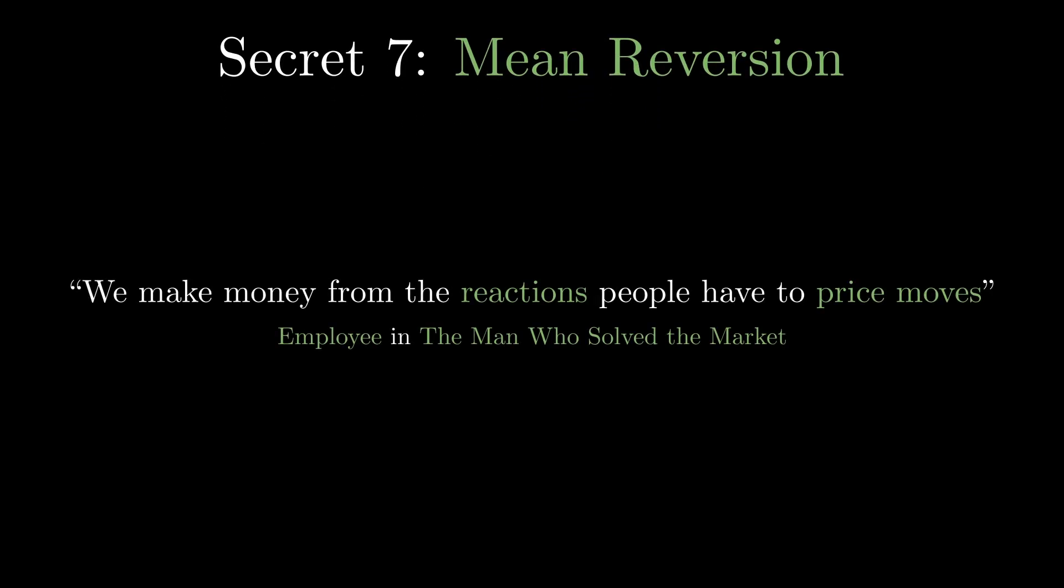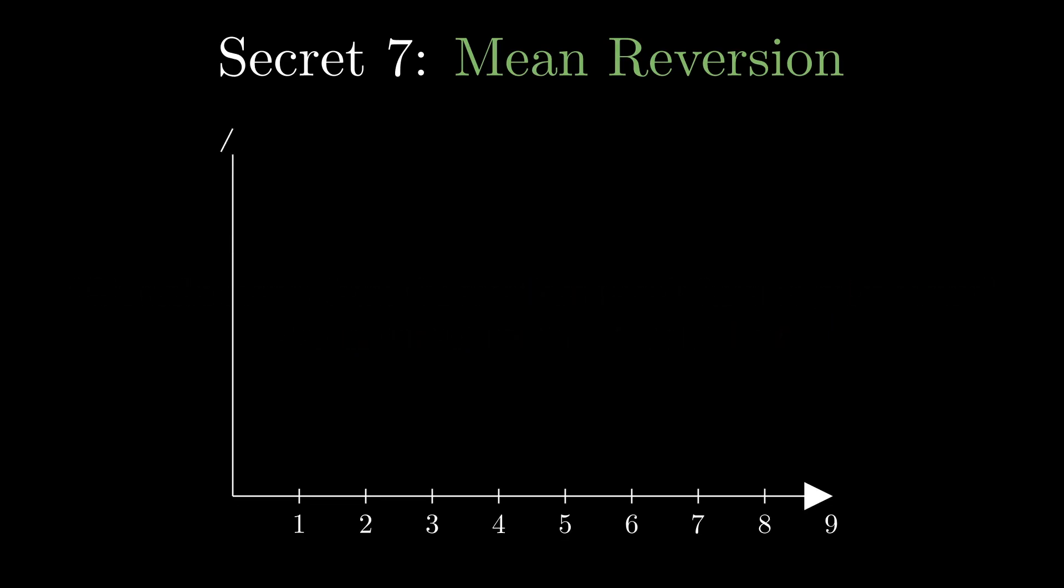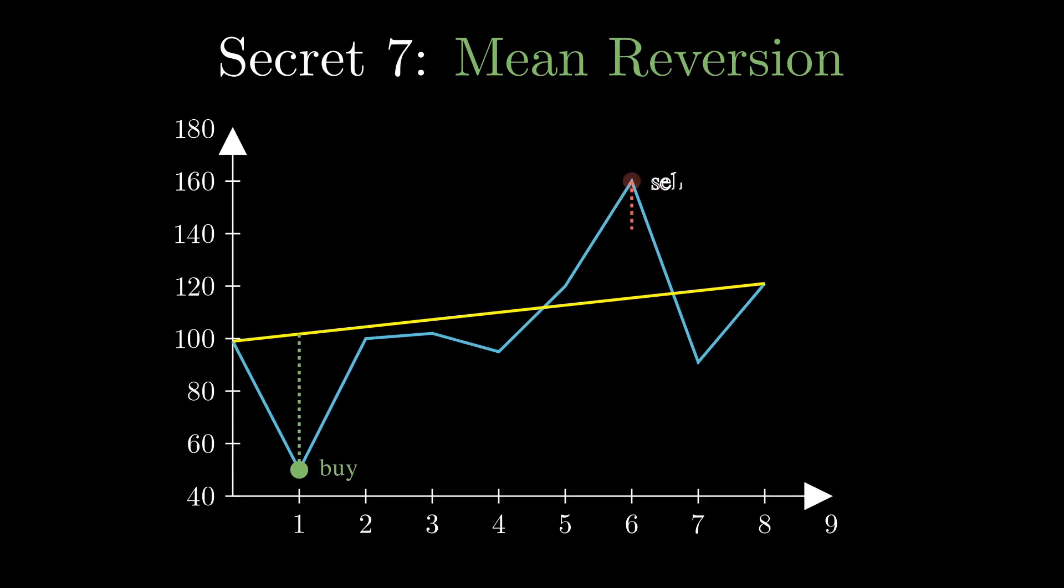The seventh secret is mean reversion, but not in the way you might expect. The basic idea is predicting if an asset is overbought or oversold and likely to revert back. If you Google it, you'll see this: when price drops too far below the moving average, it's a buy signal. When the price rises too far above, it's a sell signal. But this isn't how professionals do mean reversion. That's just a heuristic, a simple rule of thumb, not a real model, so it has no forecasting power.